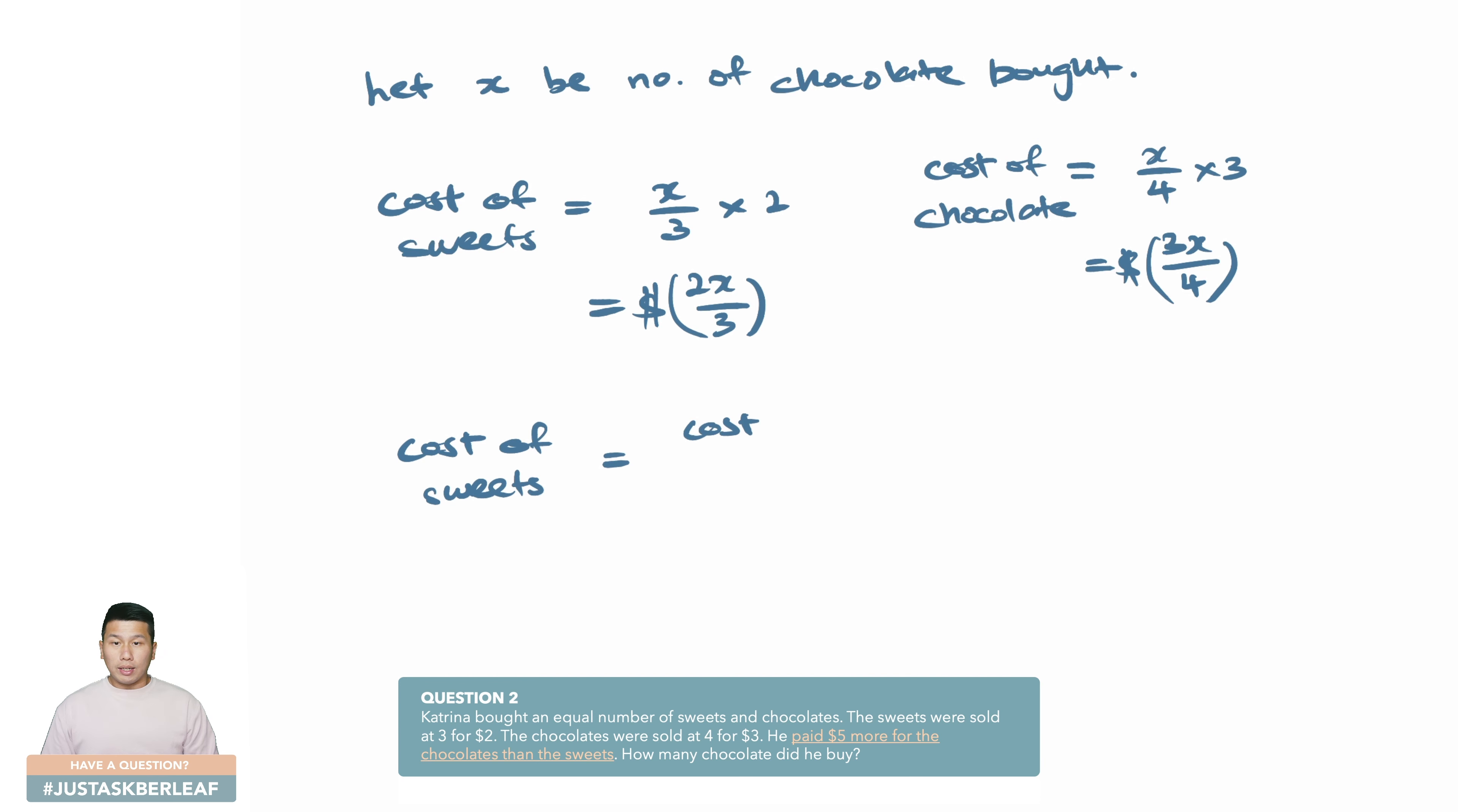Once we have the cost of both items, we can then connect them by using the last piece of information, which is the cost of the sweets. We know that the cost of sweets equals to cost of chocolate minus five dollars, as chocolate costs five dollars more than the sweets. Since we have all components required, we can just put in the numbers and form up our equation. For this cost of sweets, 2x over 3 equals to 3x over 4 minus 5, and voila, that's it.